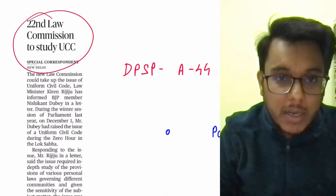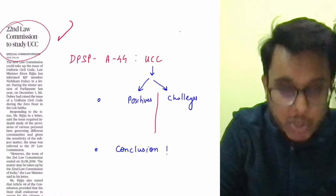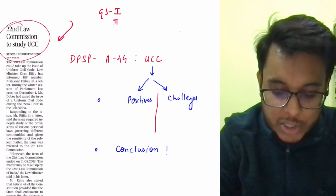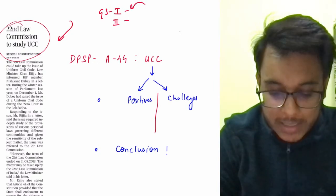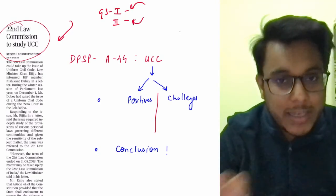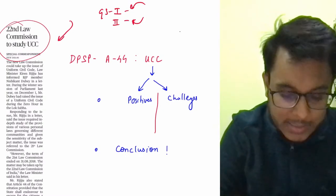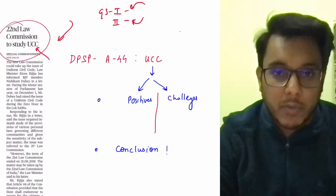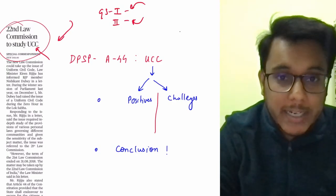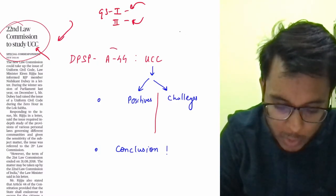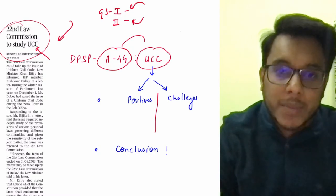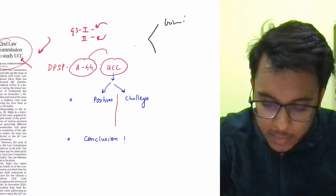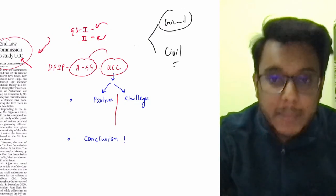22nd Law Commission to study the UCC — Uniform Civil Code. This will be important in GS paper number 1 (diversity) as well as GS paper number 2 (fundamental rights). Article 44 of the Constitution, within DPSP (Articles 36–51), talks about the Uniform Civil Code. There are criminal laws and civil laws. Criminal laws like IPC and CRPC apply to everyone irrespective of religion, gender, or caste — there is universality.